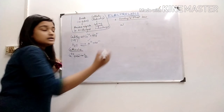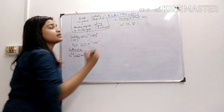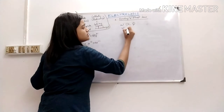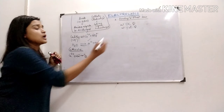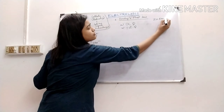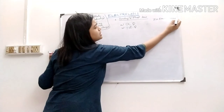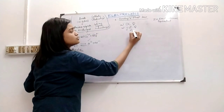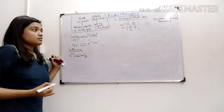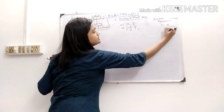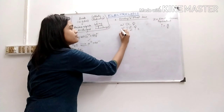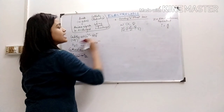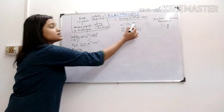Suppose the weight deposited is W. It will be directly proportional to the amount of electric current passed through it. So we write W = Z × I × t, where Z is called the electrochemical equivalent. We can substitute charge Q = I × t. This is Faraday's first law of electrolysis: the amount of substance deposited is directly proportional to the amount of electric current passing through the electrolyte.